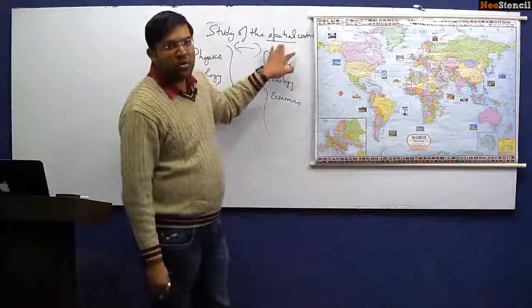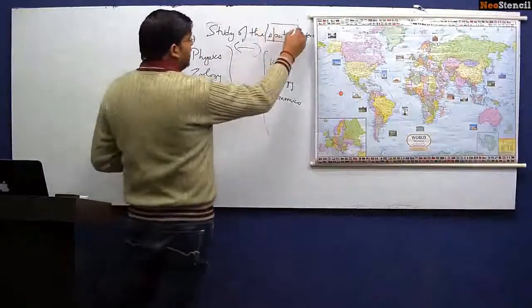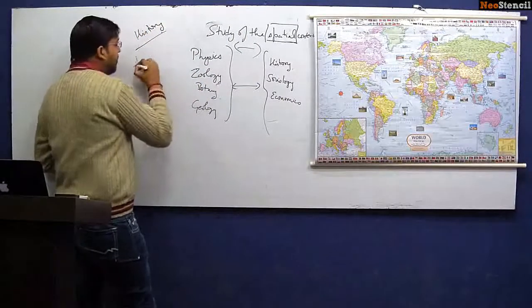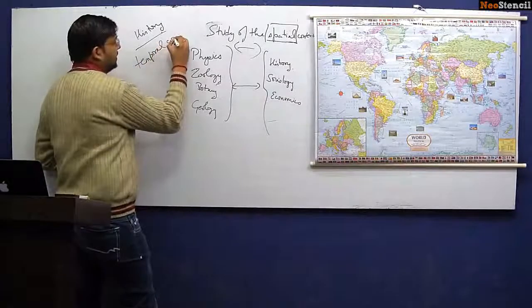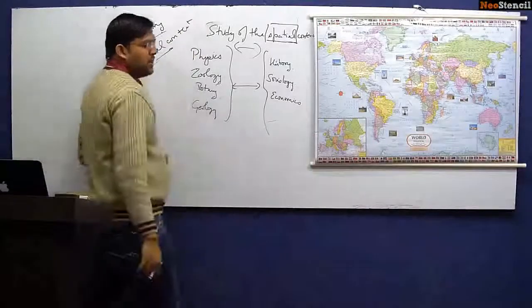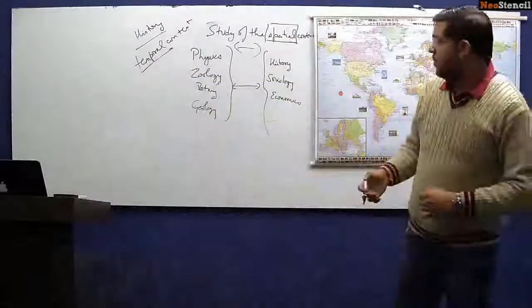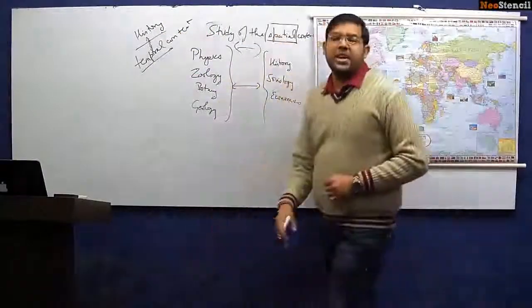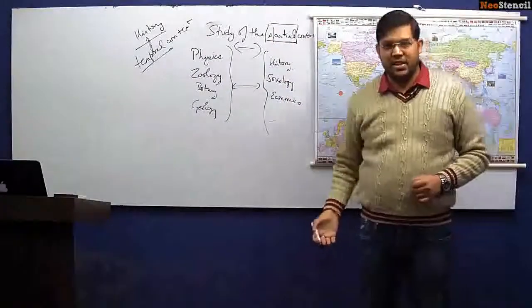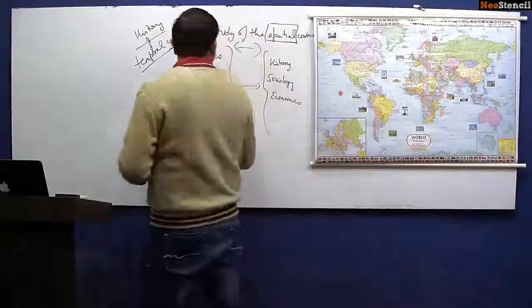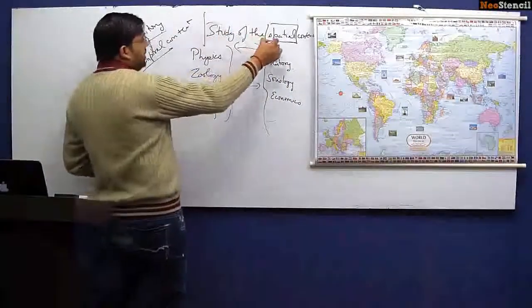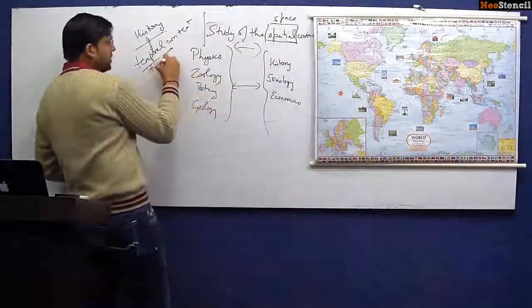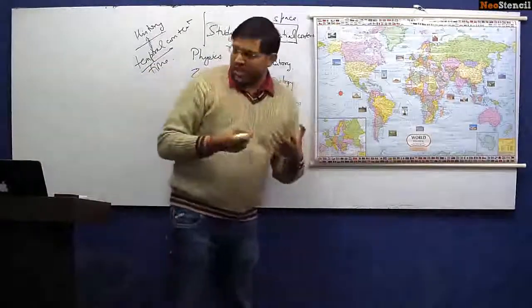For example, history is the study of the temporal context. What do we mean by temporal? It means in time - how things have evolved in time. That is what we study in history. India's freedom struggle - what happened in 1905 Swadeshi movement, 1919 non-cooperation, 1932 civil disobedience. Similarly, in geography we study the spatial context related to space, and this is related to time. So this is what the study of geography is for us.